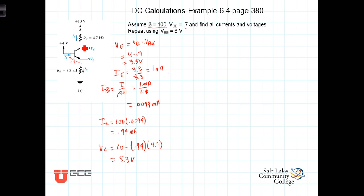We assumed active region, meaning I_C and I_B are related by the beta term. Now we check: V_C is 5.3 volts and V_B is 4 volts. The base-collector PN junction has 5.3 volts on the collector side and 4 volts on the base side — it is reverse biased. So we are indeed in the active region, and our calculations are valid.